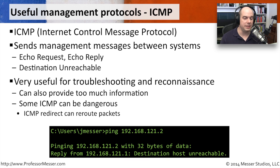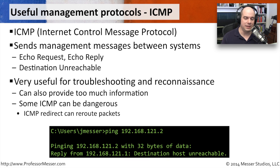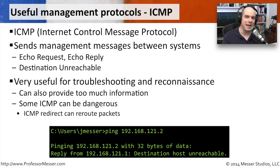If you ever try to ping a device and it says the destination host is unreachable, that's because either that device really isn't on the network, or the security administrator was smart and restricted ICMP access through the firewall. No matter how much you try, you're never going to get a response back.